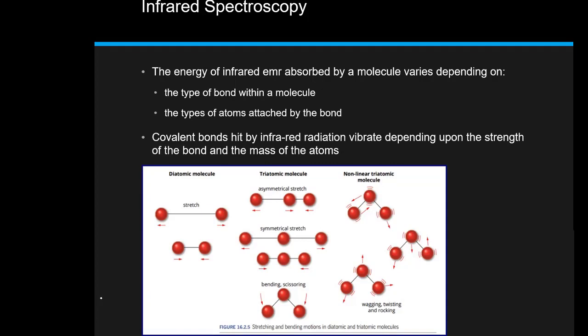As far as the infrared region of the electromagnetic spectrum is concerned, the absorbance is affected by the type of bonds that occur within a molecule and the types of atoms that are attached to that bond. Covalent bonds that are hit by infrared radiation vibrate depending on the strength of the bond and the mass of the atoms.